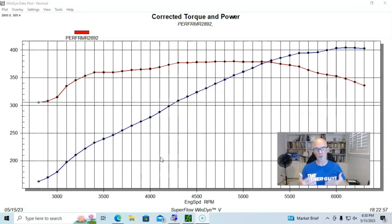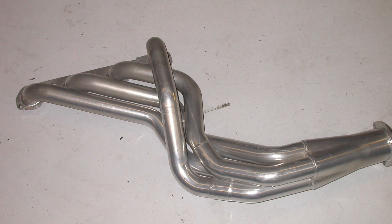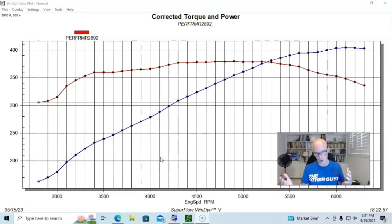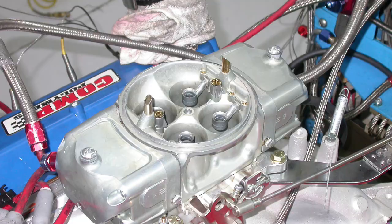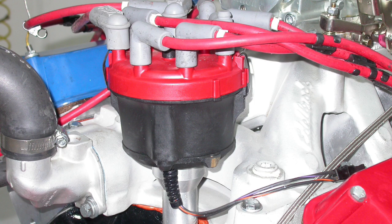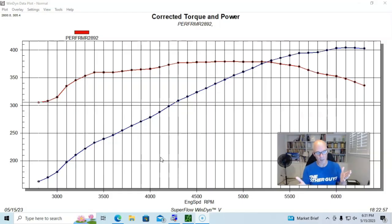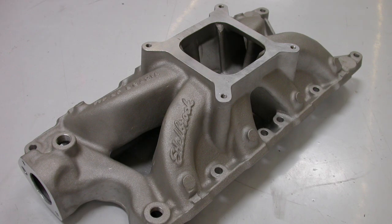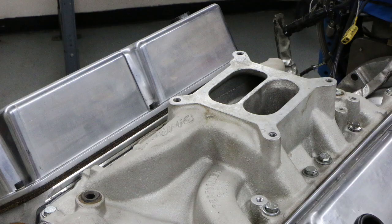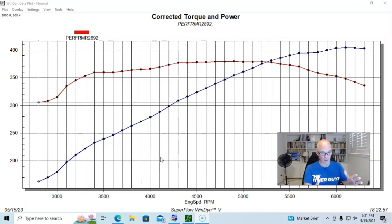So what we did was run this with a set of inch and five eighths long tube headers and then the various intake manifolds. They were all equipped with a 650 carburetor, MSD distributor. Obviously we optimized the timing and did jetting as necessary, and jetting was definitely necessary when comparing the single planes to the dual planes because the single planes were very similar in the jetting that they wanted. The dual planes were very similar in the jetting that they wanted, but the two are definitely dramatically different.